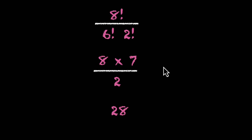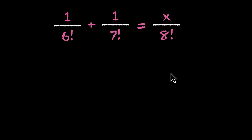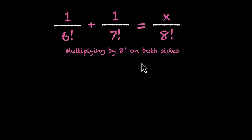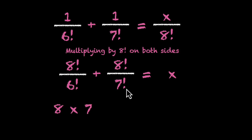Sometimes there are equations that involve factorials. For example: 1/6! + 1/7! = x/8!. The largest factorial is our LCM — 8! includes both 7! and 6!. Multiplying both sides by 8! we get: 8!/6! + 8!/7! = x. We know 8!/6! = 8 × 7 = 56, and 8!/7! = 8. So 56 + 8 = 64, meaning x = 64.